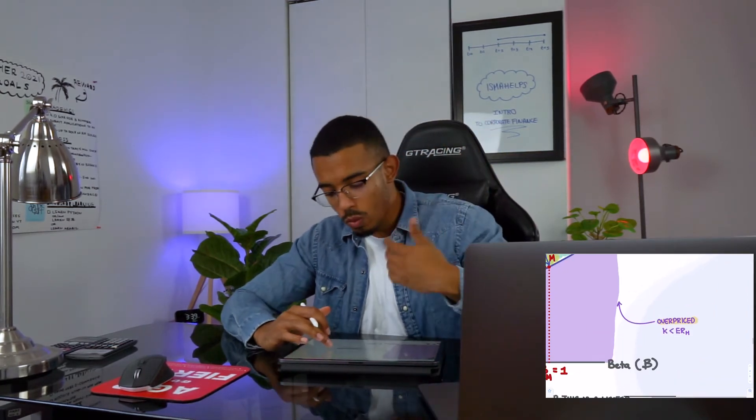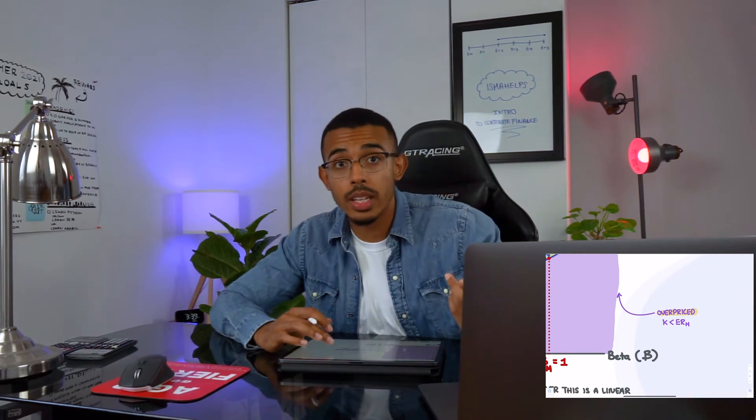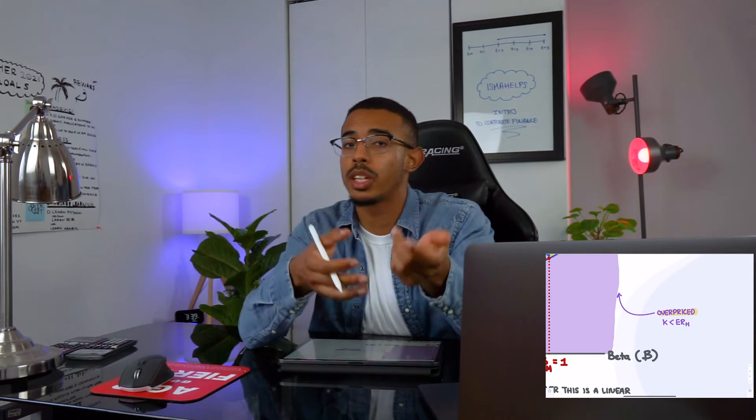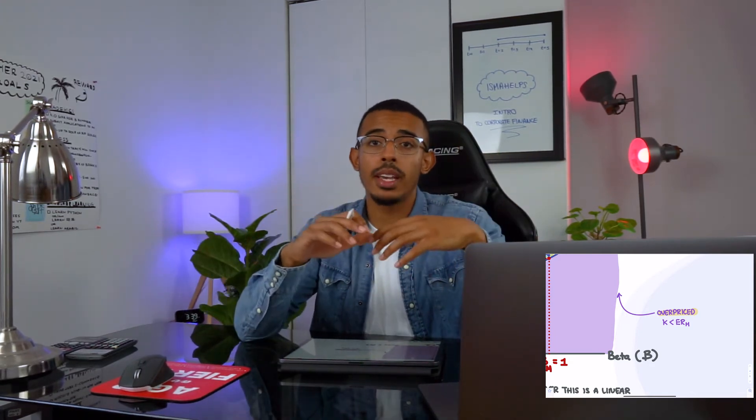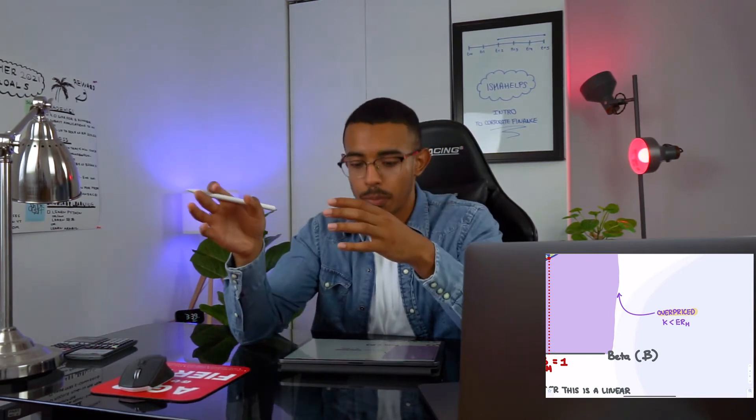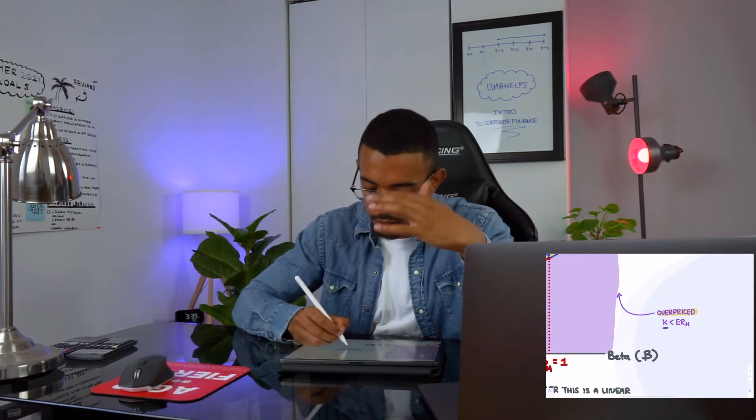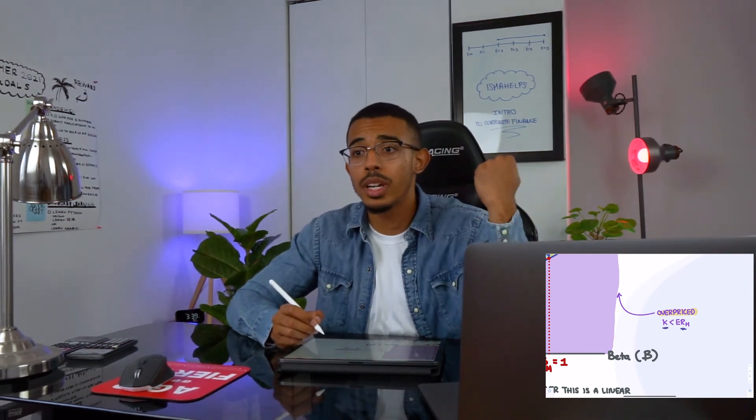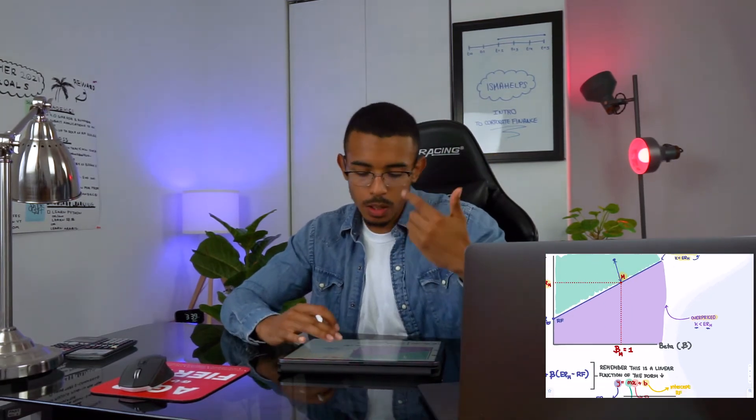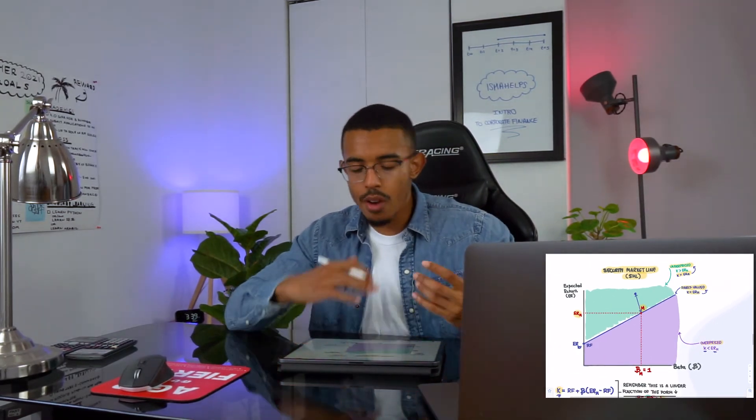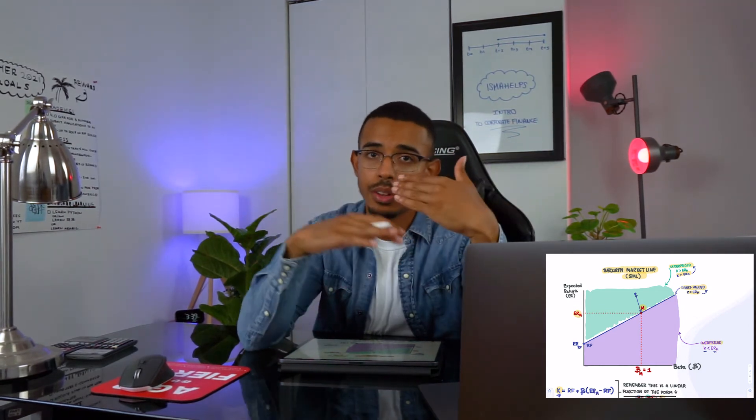Conversely, if K is smaller than ERM, that means you're not making enough return vis-à-vis what the market expects you to make. That's problematic because you should be making at least, if not exactly, the market return. So if K is smaller than ERM, it's overpriced because you're spending way too much for something that's giving you less than expected. That's the rationale behind something being overvalued, undervalued, or fairly valued.